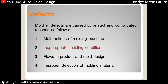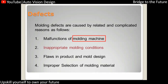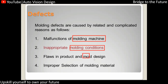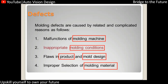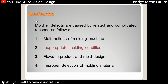Defects mainly occur due to several reasons — manufacturing material, the molding machine, and molding conditions. Environmental conditions that need to be maintained with respect to the machine, if not proper, can cause defects. Improper molding design or product design can also be an issue, and improper molding material selection is another common cause. These are common issues that result in a quality deviation, which is called a defect.